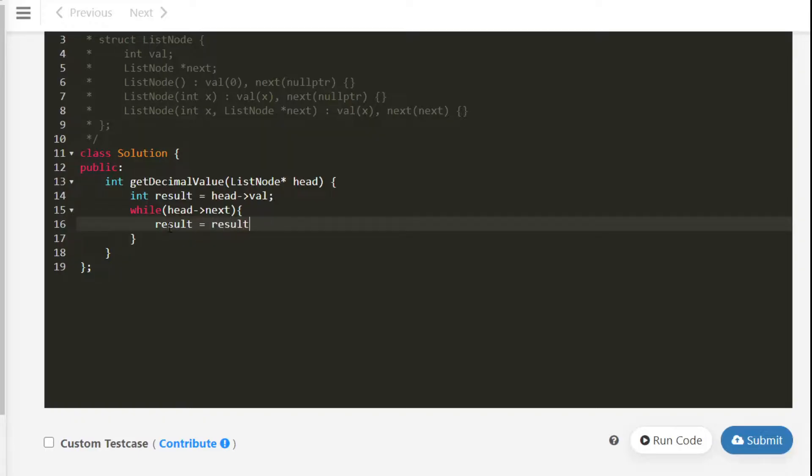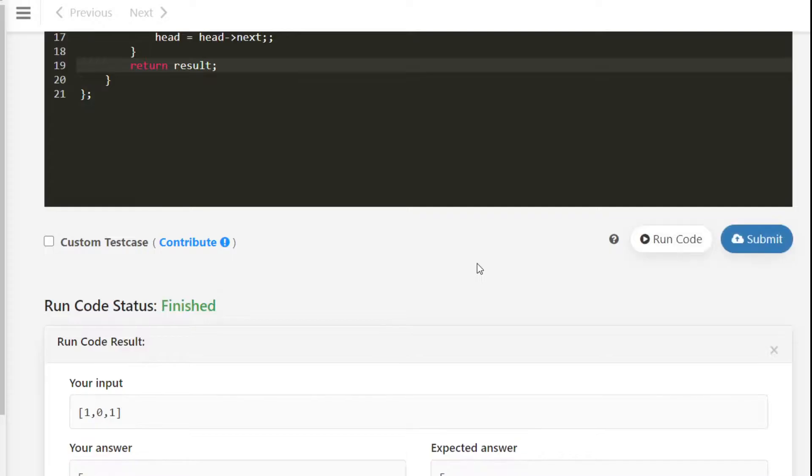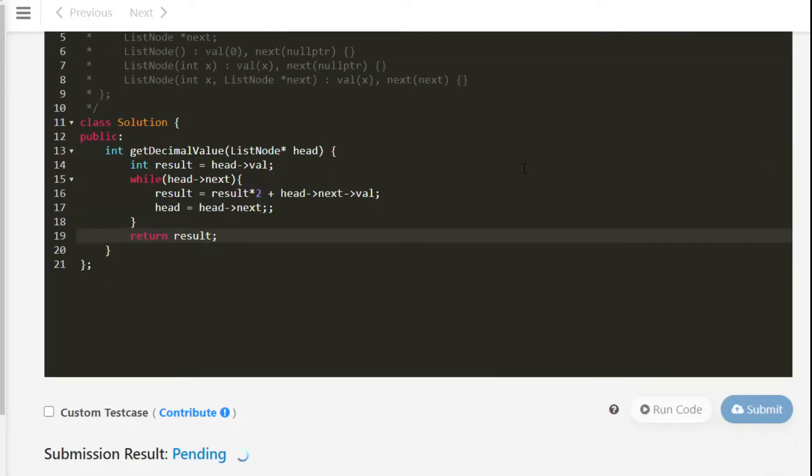Result equals result multiplied by 2 plus head.next.val, and then head equals head.next. And finally we will return the result. And this solution is correct, so submit.